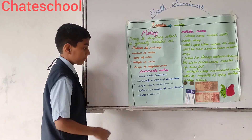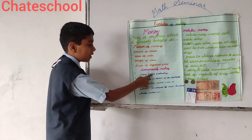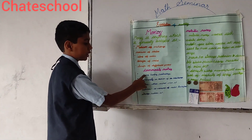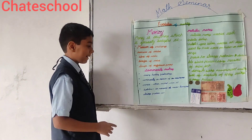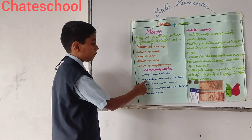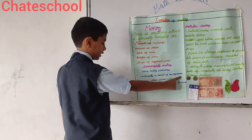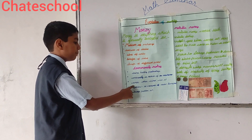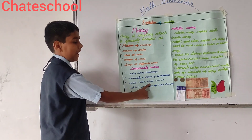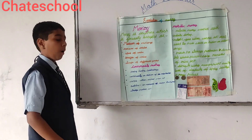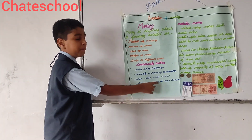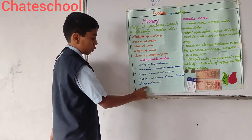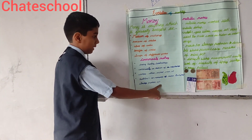Topic number two, commodity money. During early days, pasturage. Point second, commodity as medium of exchange. Point number three, examples: wheat, animal, food, etc. Problems: no measure of value, transfer problem, storage problem, etc.